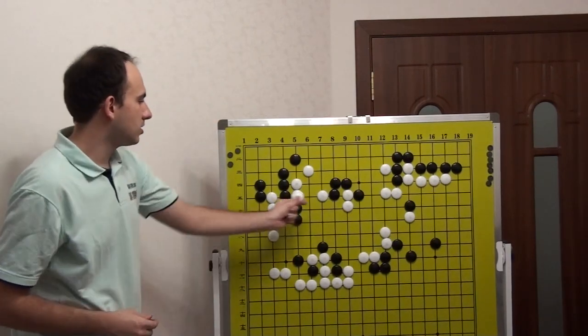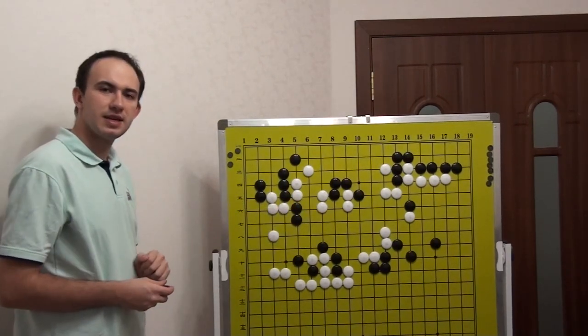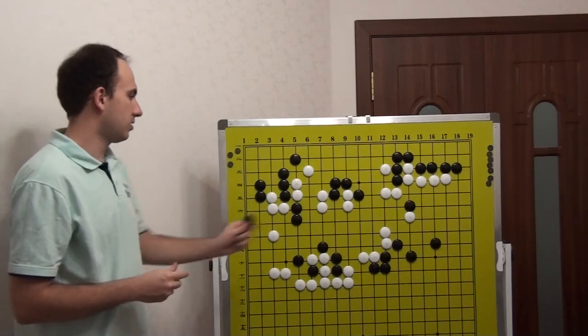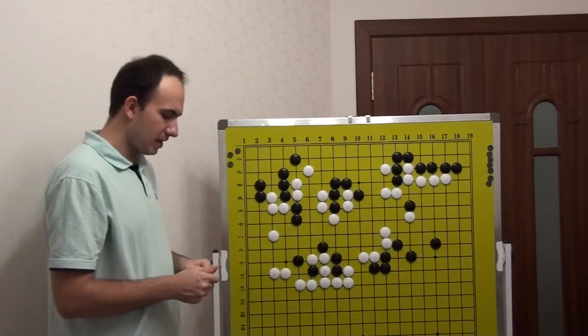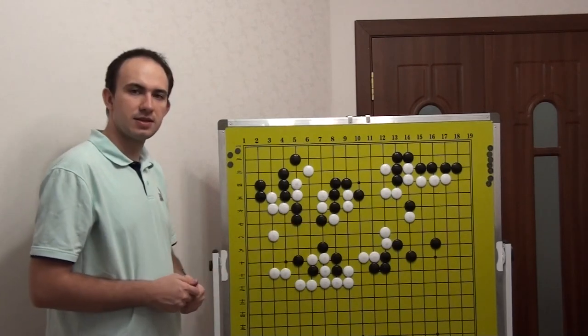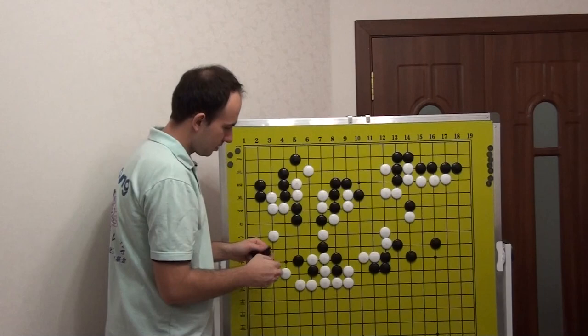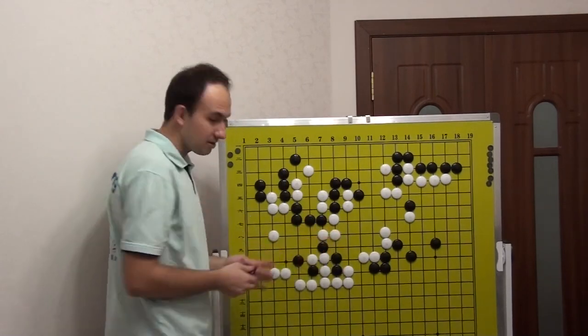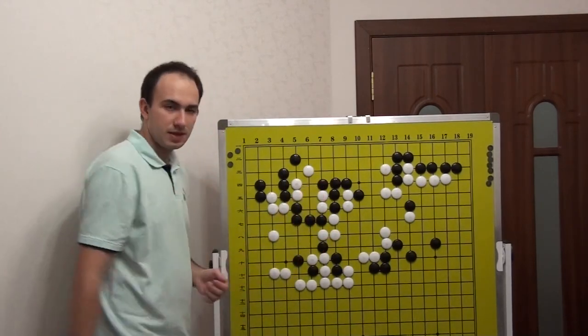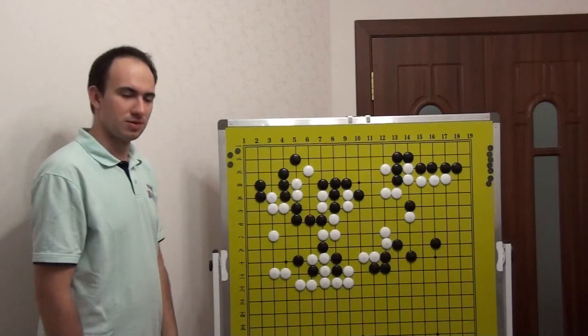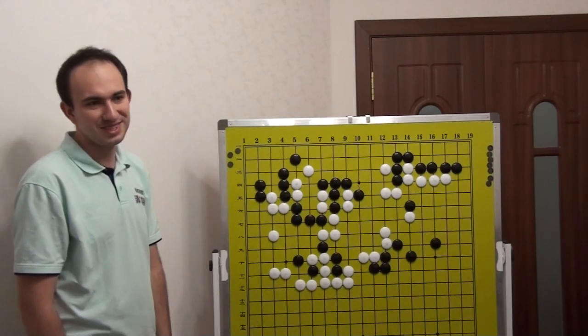Maybe other option, White can play here. Well, Black will play of course here, and now Black can cut from this side. If White plays Atari and connects, Black can kill these stones, so I think it's good results for Black.